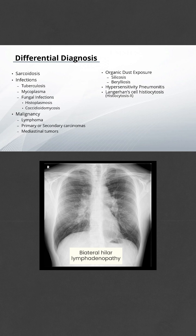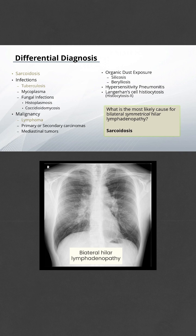In the exam, do not forget to mention these three differentials at least: sarcoidosis, tuberculosis, and lymphoma. And if asked what is the most common cause of symmetrical bilateral hilar lymphadenopathy, the answer is sarcoidosis.